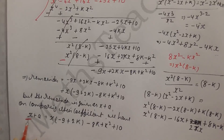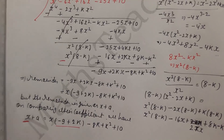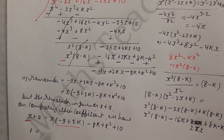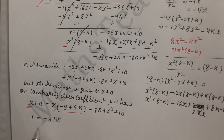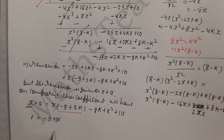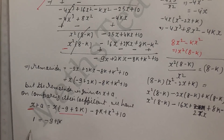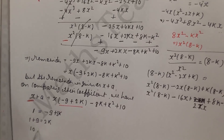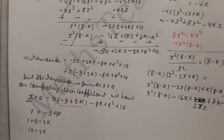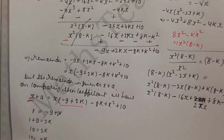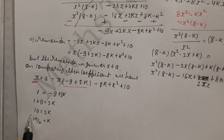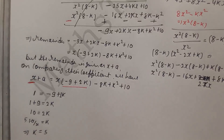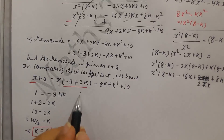Comparing the coefficients of x: on the right side the coefficient of x is 1, and on our remainder the coefficient of x is (minus 9 plus 2k). Setting them equal: 1 equals minus 9 plus 2k, so 1 plus 9 equals 2k, giving 10 equals 2k, and therefore k equals 5.